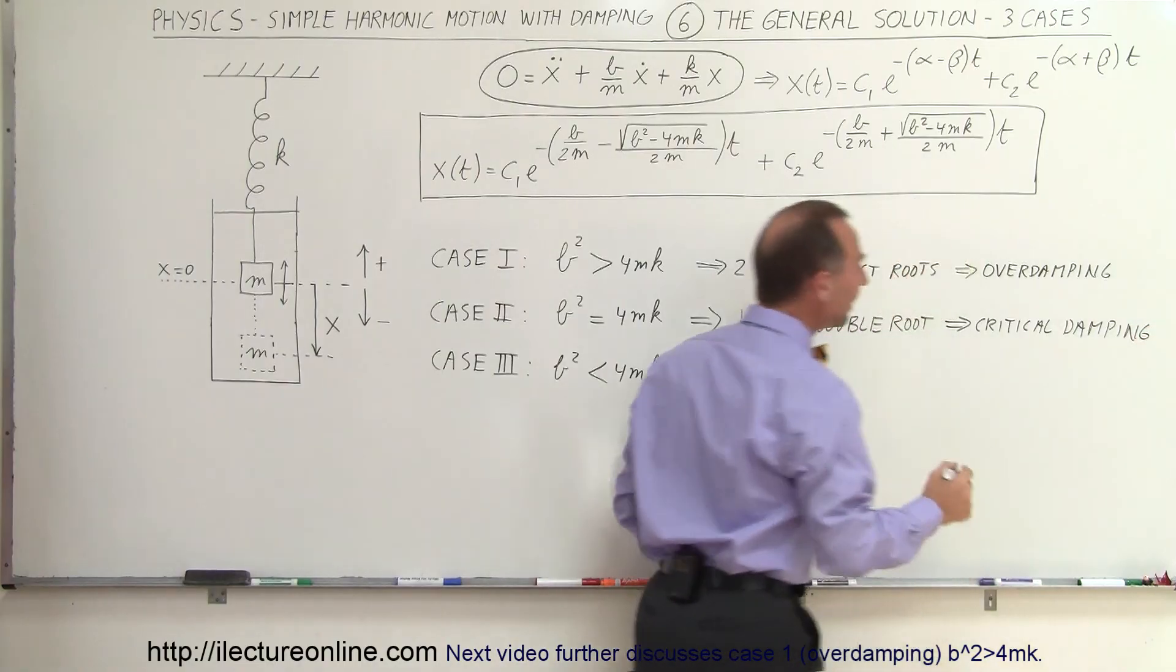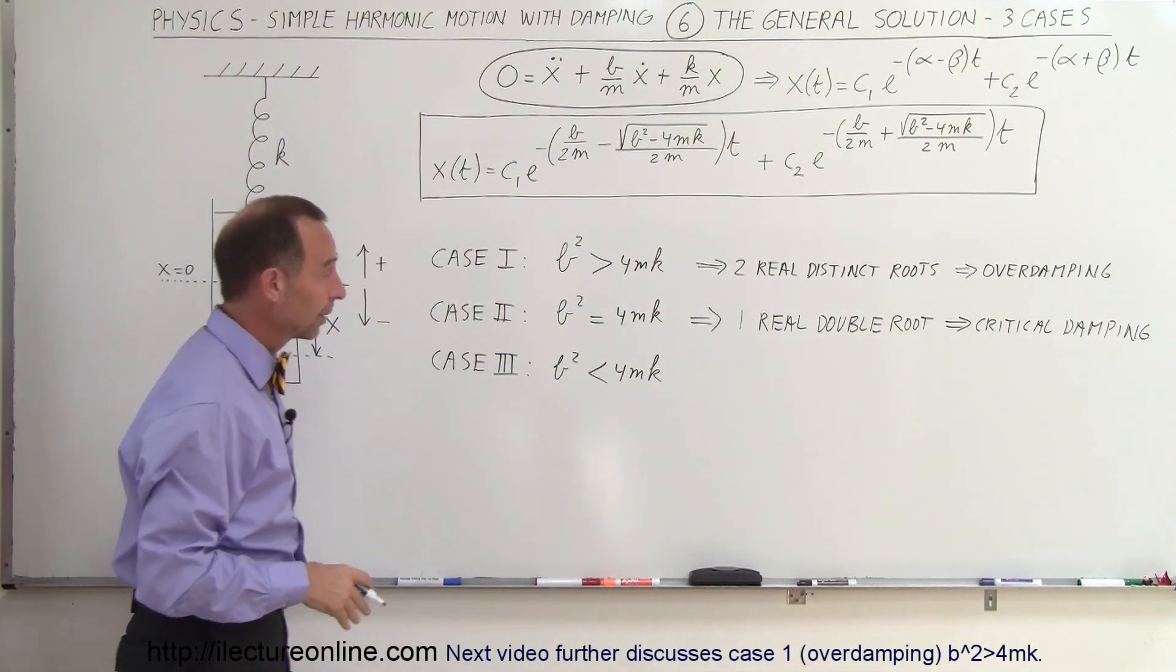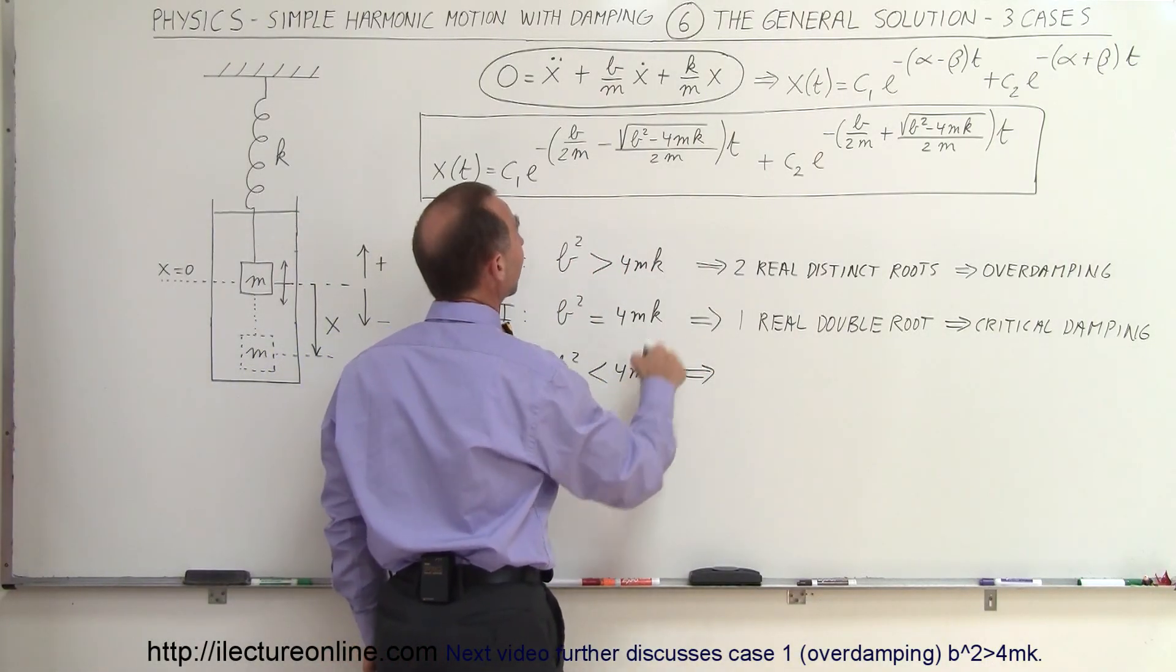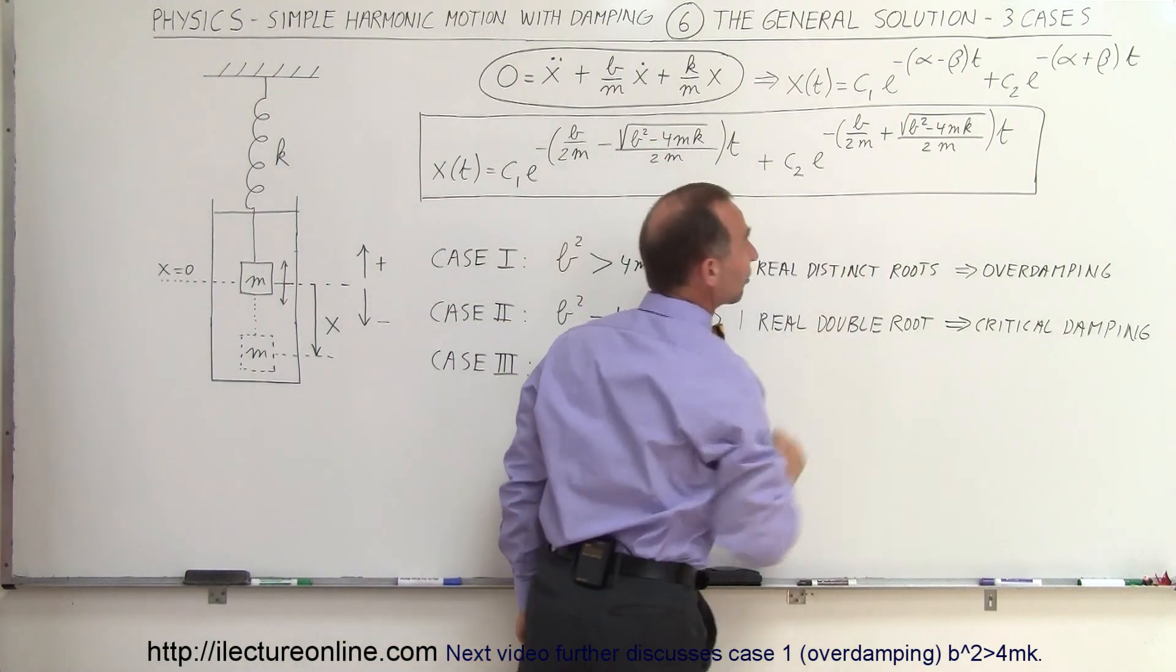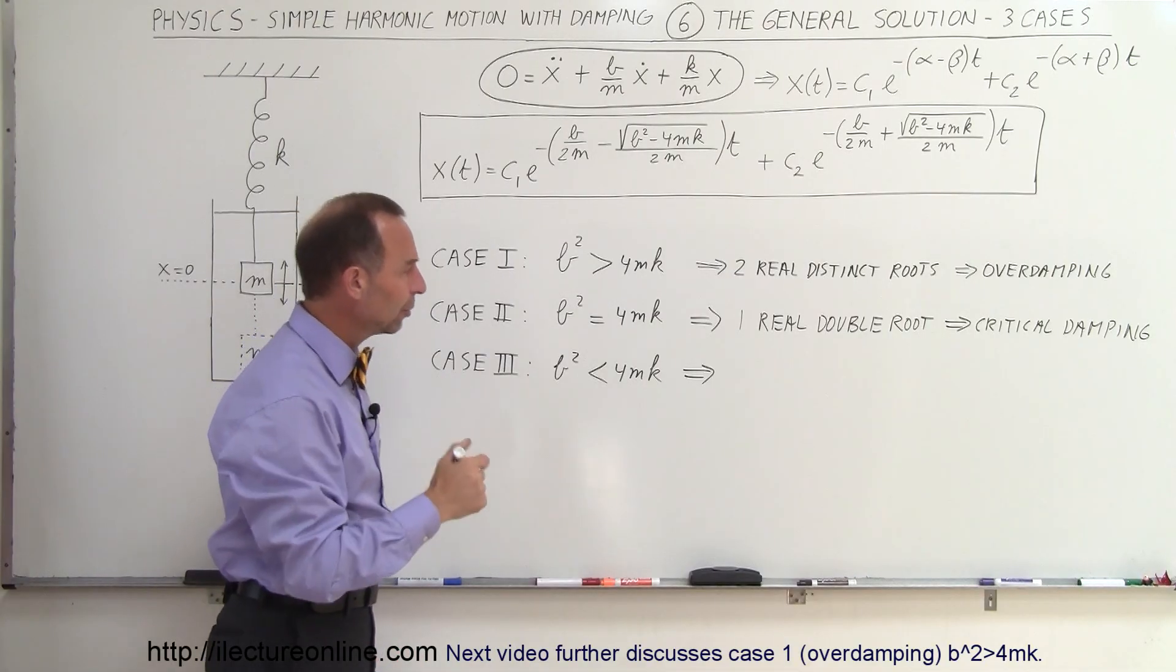And finally, the third solution, which is actually the more interesting solution. What happens there is when B squared is less than 4MK, then this becomes an imaginary solution and that becomes an imaginary solution. You have an e to the minus real number.